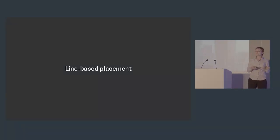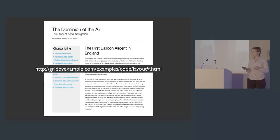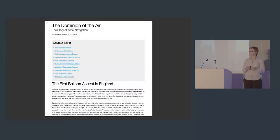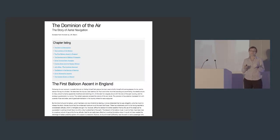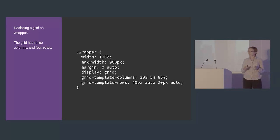We've looked at line-based placement, so let's look at a more realistic example of an actual page. I'm going to build a very straightforward layout using grid. Here's my HTML: I've got a parent with a class of wrapper and three child elements — a header, a panel, and a content area. I've added some CSS using the Skeleton framework just for the typography, but it has no layout, so it's just displaying in source order.